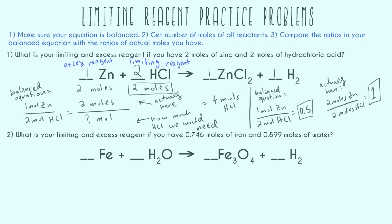What is your limiting and excess reagent if you have 0.746 moles of iron and 0.899 moles of water? This problem still just gives moles, but has messier numbers and a more complicated balancing step. Step one: balance the equation. I need three irons and four oxygens, which means I'll need four hydrogens as well. Now it's balanced. We have 0.746 moles of iron and 0.899 moles of water.